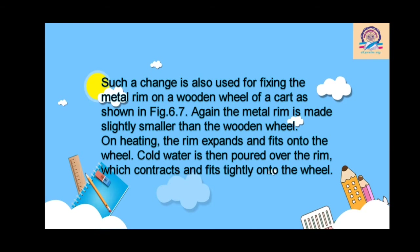This example is similar to the previous one, where the ring of the iron blade is kept smaller. Here, the rim of the wooden wheel is kept smaller, so that after heating it expands and after it cools down it fits tightly on the wooden wheel. I hope you are now clear with the concept of expansion and contraction. These are nothing but changes in our day-to-day life.